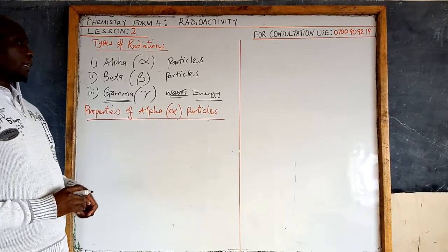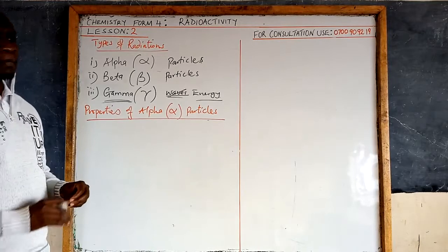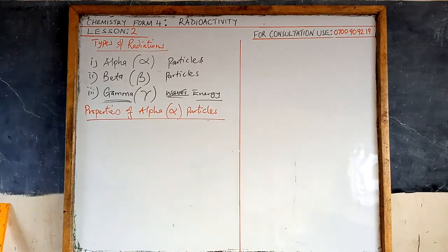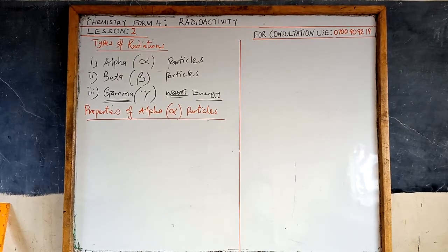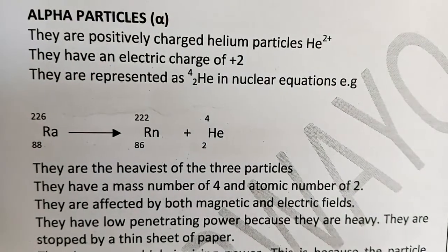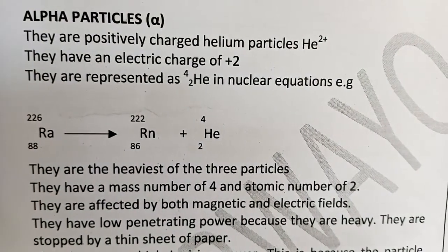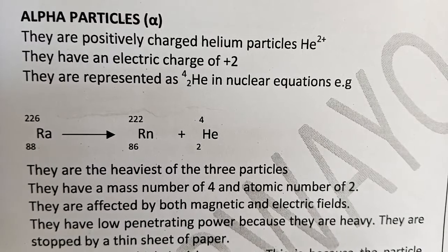Now we are going to look at the properties of each of these particles in detail. Let me project them on your screen so those who like can make notes with ease. Let's start with alpha particles — they are positively charged helium particles.